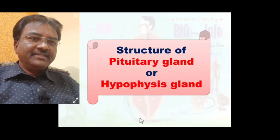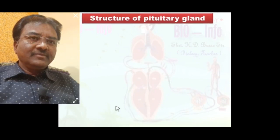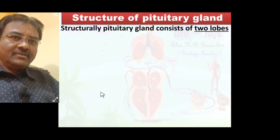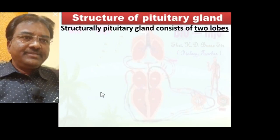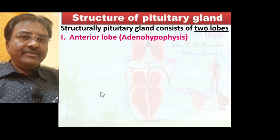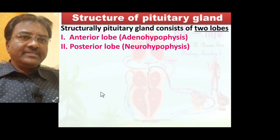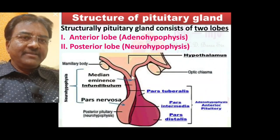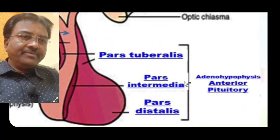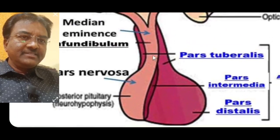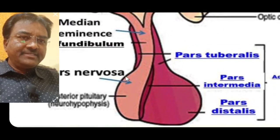Let us start today's first concept: structure of pituitary gland or hypophysis gland. Structurally, pituitary gland consists of two lobes — adenohypophysis or anterior lobe, and posterior lobe or neurohypophysis. As seen here in the diagrammatic representation, adenohypophysis is the anterior pituitary and neurohypophysis is the posterior pituitary.